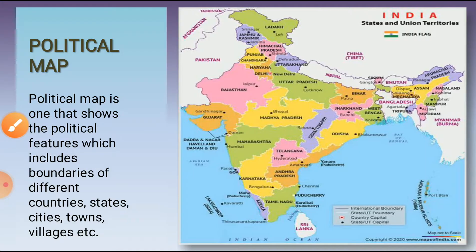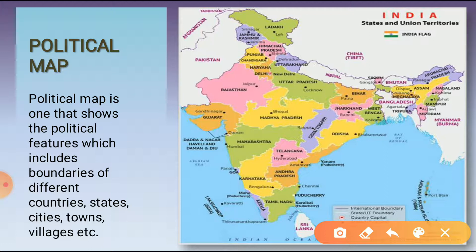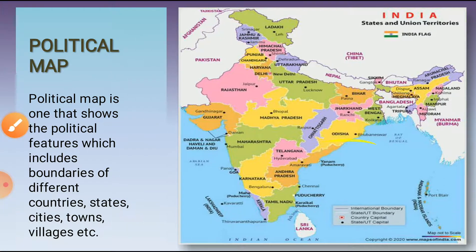A political map is one that shows political features which include boundaries of different countries, states, cities, towns or villages. Political maps show the political boundaries of different countries, cities, towns, villages and states.